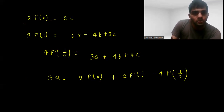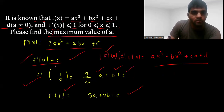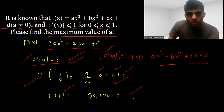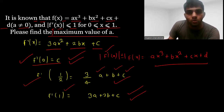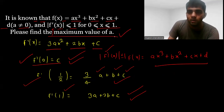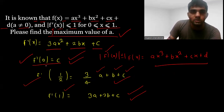We take 2·f'(0), and there are these 3 equations with 3 variables a, b, and c. We can eliminate b and c and find one equation only in terms of a, because we have to find the value of a.